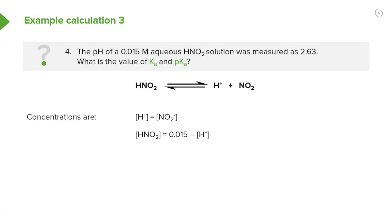And also because with every dissociation of one equivalent of HNO2 we must therefore get one equivalent of H plus and one equivalent of NO2 minus. By doing this we are able to say that the concentration of HNO2 actually within our equilibrium is given by our starting concentration of HNO2 minus the concentration of H plus.